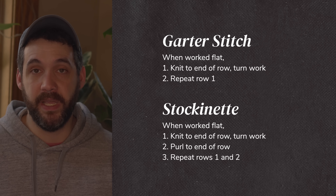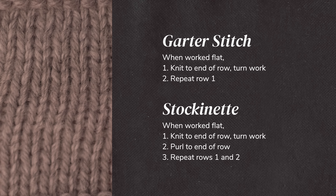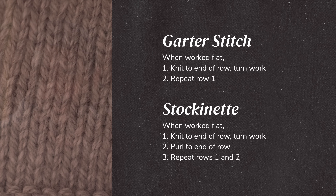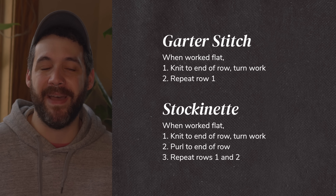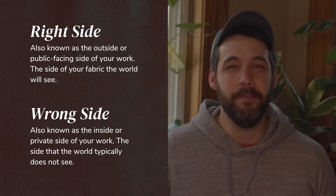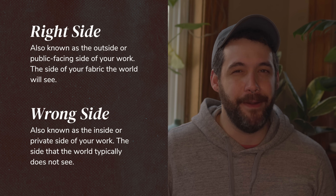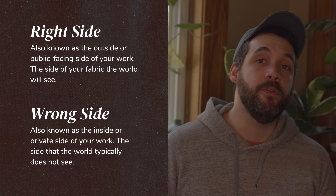The next thing you might want to learn is stockinette, which is when you knit a row, flip your work, and purl the whole row — because a purl is just the back side of a knit stitch. Then you'd knit the third row, flip it, and purl again. That's how you end up with all knit stitches on one side and all purl stitches on the other. Sometimes you'll hear reverse stockinette, which is just the back side of stockinette used when the purl side is the public-facing side. You'll also hear right side and wrong side — some people prefer to think of these as the outside and inside of a garment.